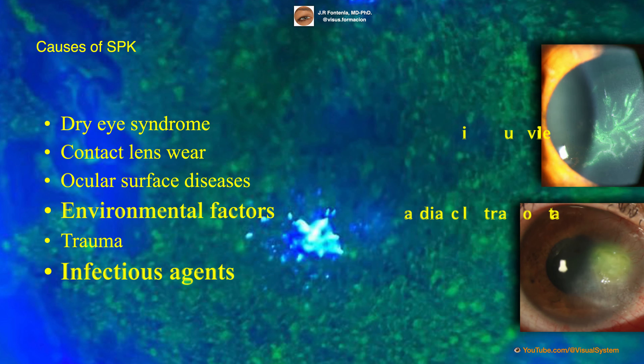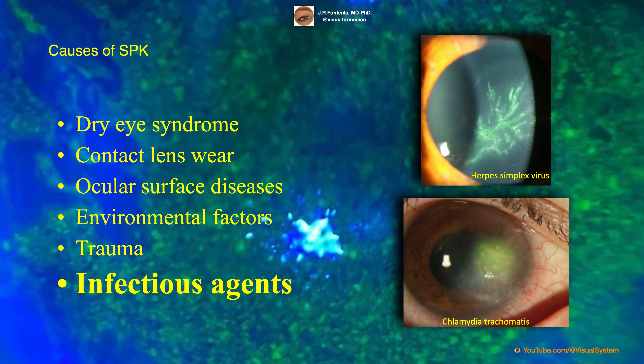Viral and bacterial infections such as herpes simplex virus and Chlamydia trachomatis can also cause superficial punctate keratitis.